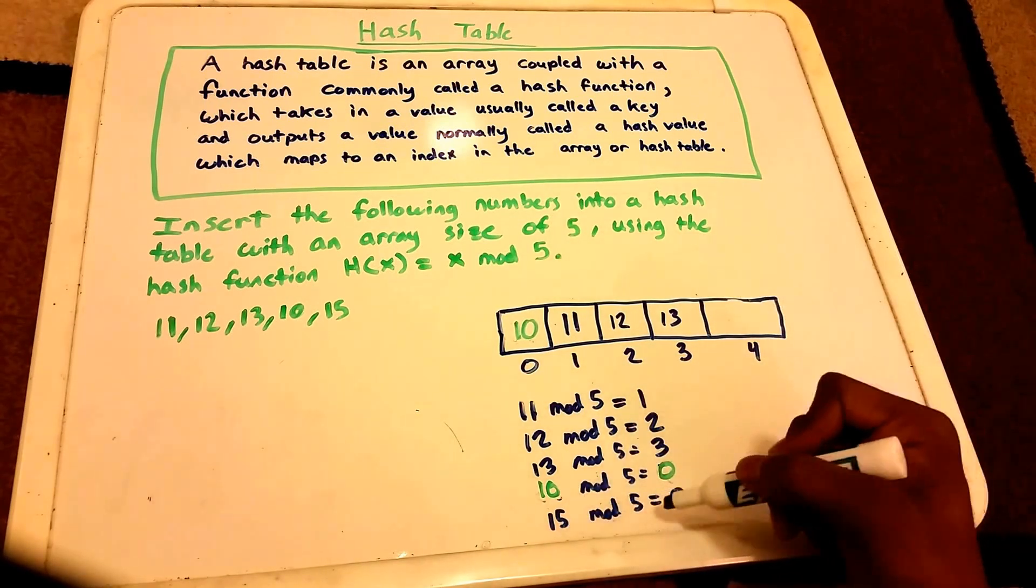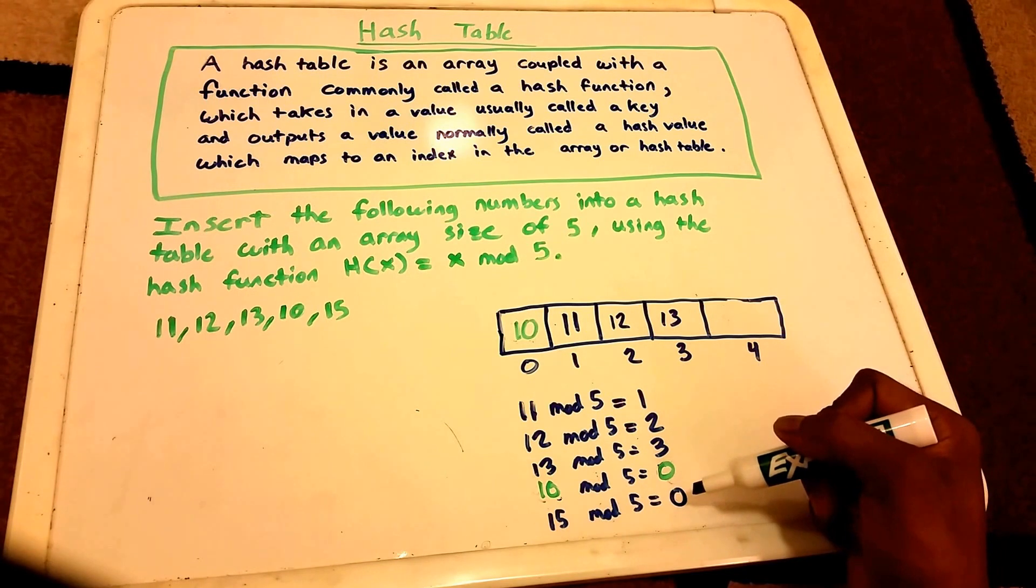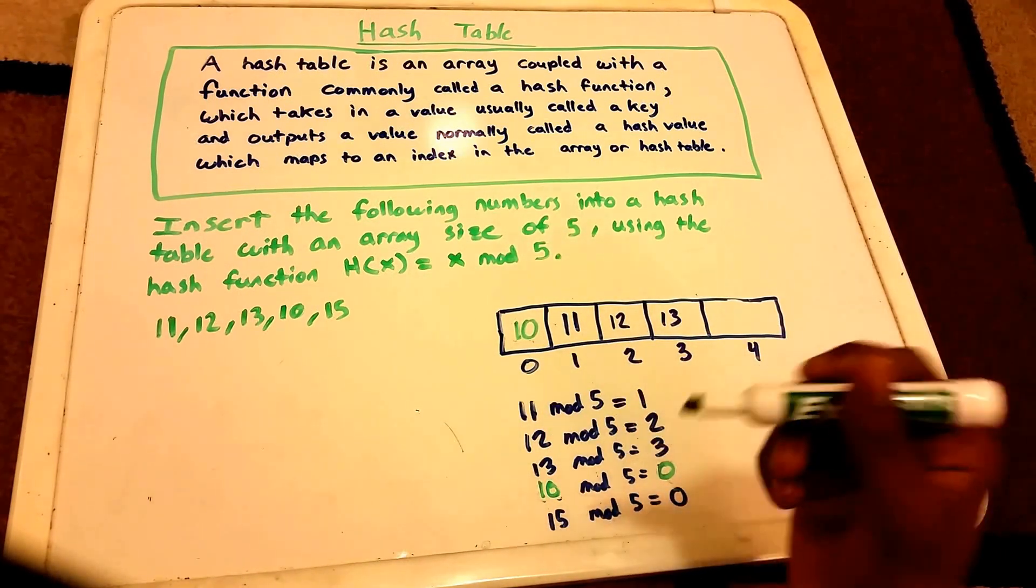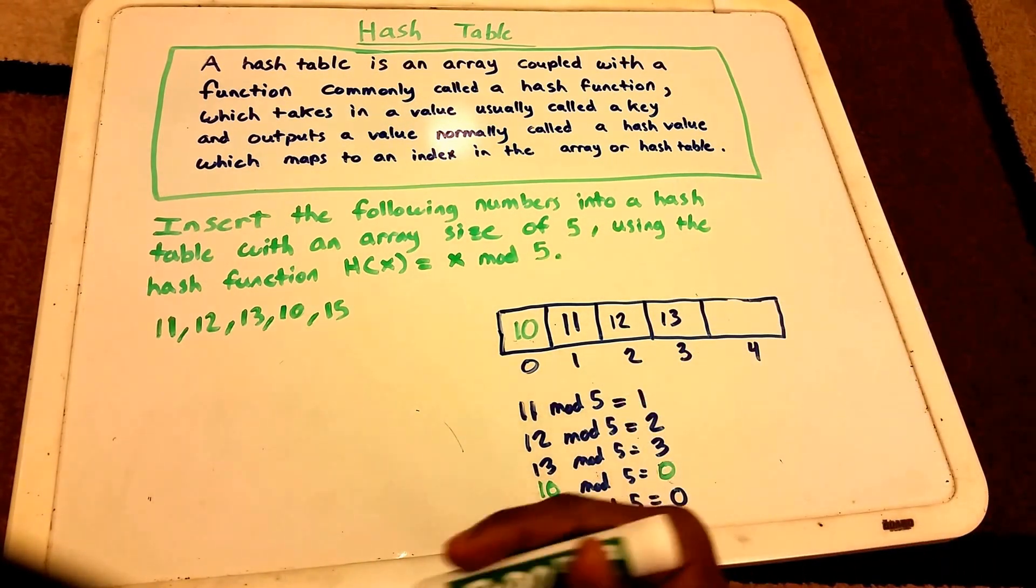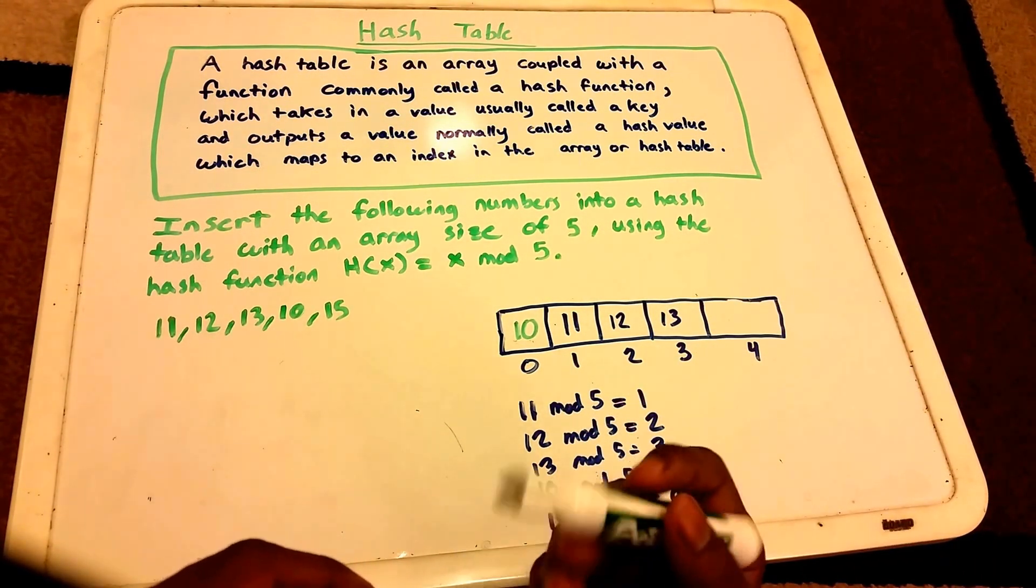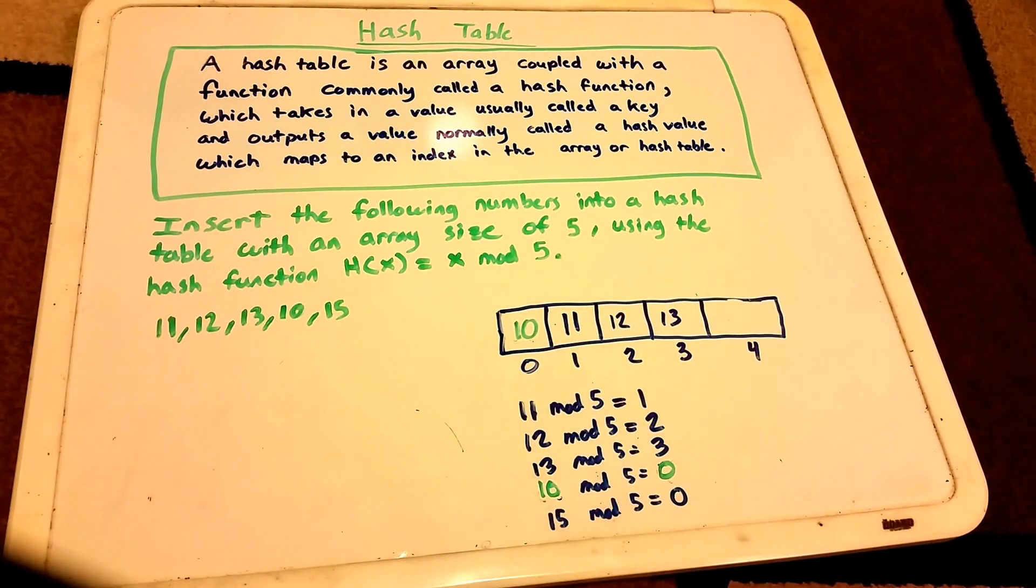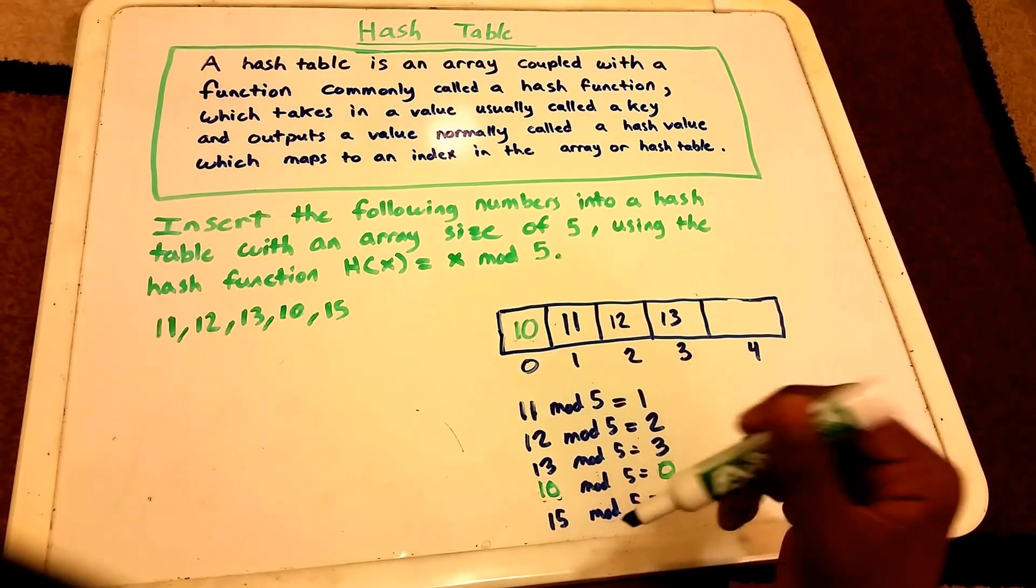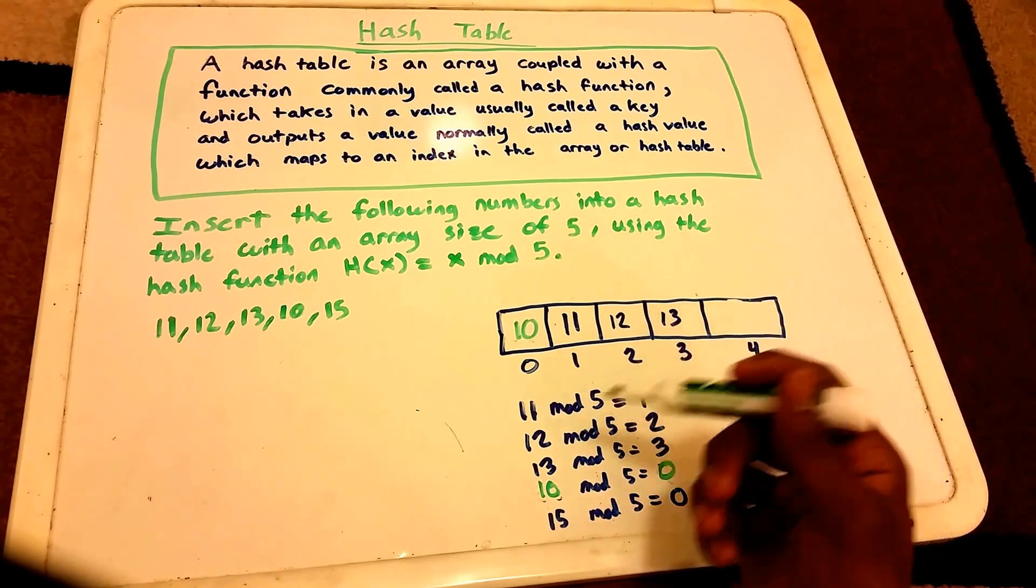Now we get to 15 mod 5, and that hashes to the same value, which is at index 0. So what do we do in this case? This is called a collision. A collision occurs when the input hashes to the same index, or when a key hashes to the same index. We will talk more about what to do in this case in another video.